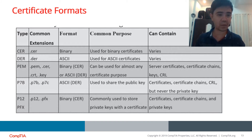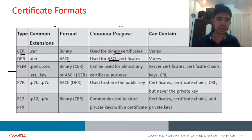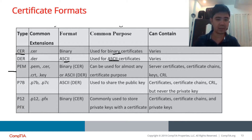Here is a comparison table of certificate file formats. CER is binary, DER is ASCII. PEM can be used for almost any certificate purpose. We have different format types because digital certificates are implemented on different platforms, and some platforms support specific file formats. For sharing public keys, the format is .p7b or .p7c. For storing private keys with a certificate, it is P12 or PFX.